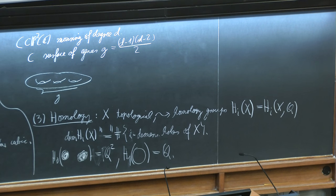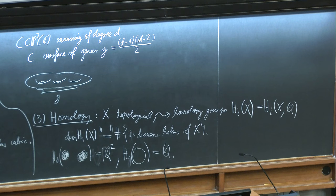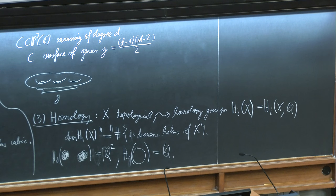For instance, something consisting of two connected components will have H_0 equal to ℚ², one factor for each component. A circle has H_1 equal to ℚ, corresponding to the hole in the middle, and H_0 equal to ℚ as well. Obviously this is not a definition. In your lectures on algebraic topology you had an introduction to homology — I think simplicial homology — so I will very briefly review how that goes.